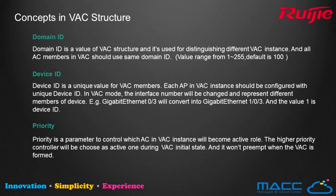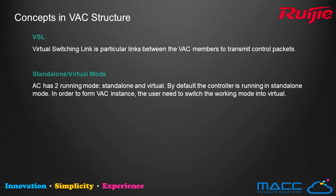Priority is a parameter that controls which AC in the virtualization instance will become the Active role. The higher-priority controller will be chosen as the active one during the VAC initial stage, and this won't change once the VAC is formed. VSL — Virtual Switching Link — is a dedicated link between AC members used to transmit control packets. AC has two running modes: standalone and virtual. The controller runs in standalone mode by default, and the operator needs to switch it to virtual mode for virtualization.